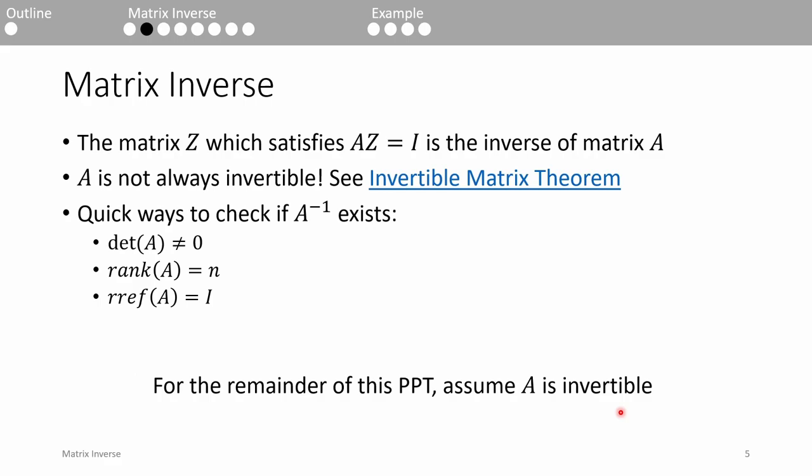Also as a review, the matrix Z is called the inverse of A if you get the identity matrix I upon multiplying A and Z.